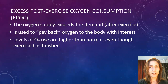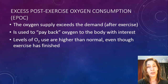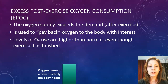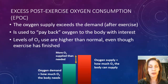EPOC, or Excess Post-Exercise Oxygen Consumption, basically means that when you've stopped exercising, your body takes in a bit more oxygen than you actually require. Oxygen supply actually exceeds the demand. It's sort of like you've borrowed from a bank of oxygen and need to pay it back after you've finished exercising. Looking at the graph, the oxygen supply — the red line — is actually higher than what you need, and the yellow arrow represents getting more oxygen than required.